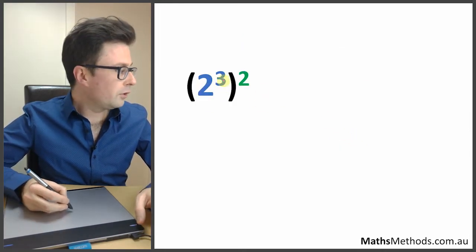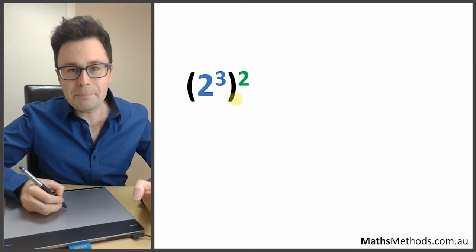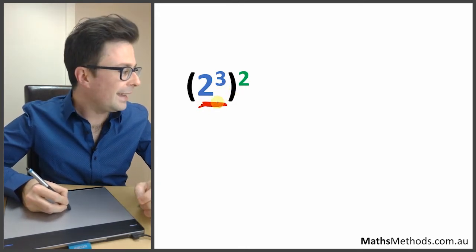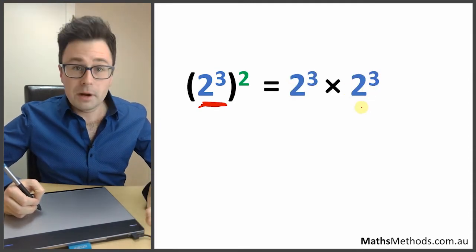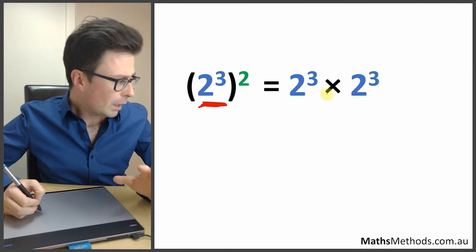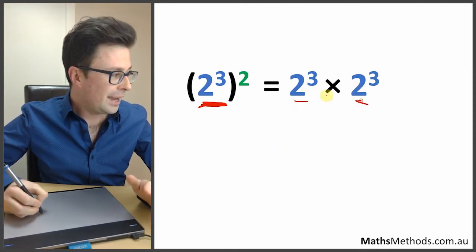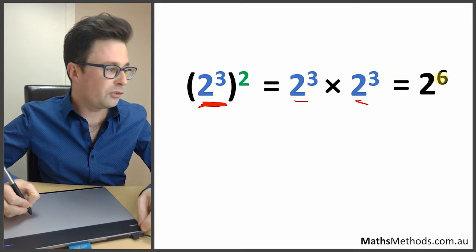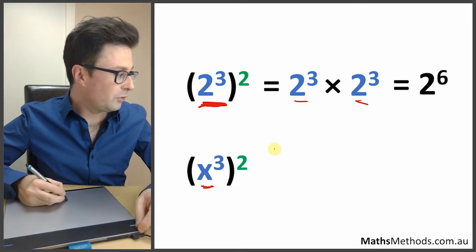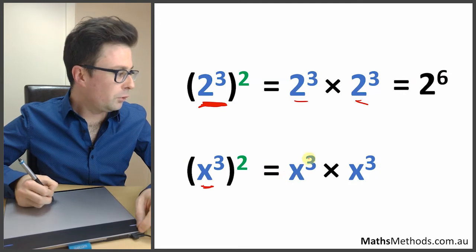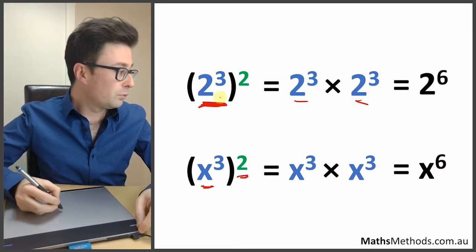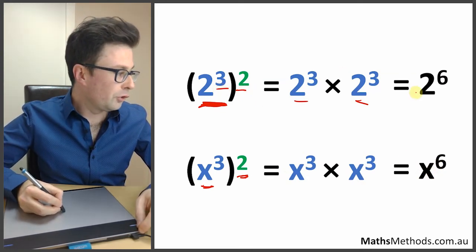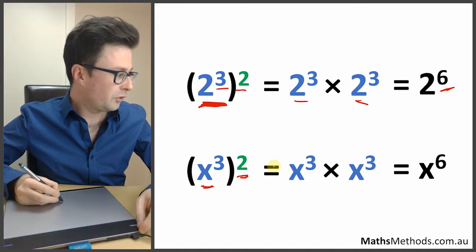With a power of a power, like 2 to the power of 3, to the power of 2, we've got 2 of those brackets multiplied by each other. Using our previous rule, we can add the 3's together, giving 2 to the power of 6. The same applies with a letter — 2 x to the power of 3's multiplied by each other means adding the 3's together, giving x to the power of 6. The rule is simply 3 times 2 equals 6.